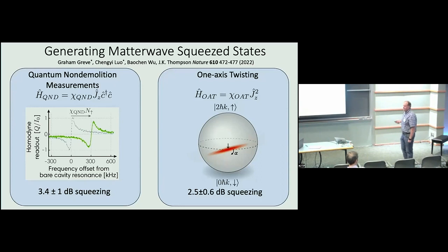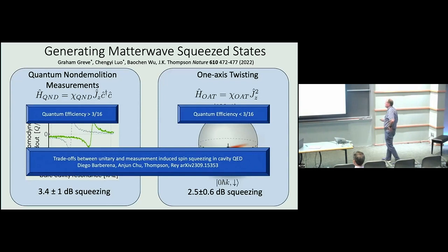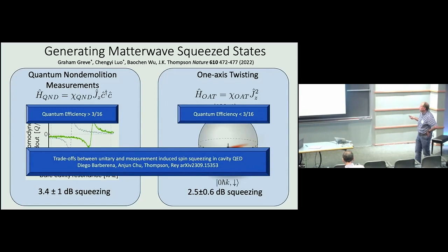We did it two ways: via QND measurements and one-axis twisting. One thing we worked through for ourselves — there's a paper on the archive led by Diego — is when is QND better and when is one-axis twisting better? The main result is: if you can build a readout detector with quantum efficiency greater than 3/16, QND wins. If you can't build a detector with quantum efficiency greater than 3/16, then one-axis twisting wins. It's a pretty generic result, even in different regimes with or without spin flips induced by the probes.